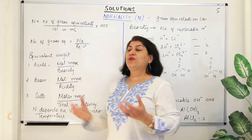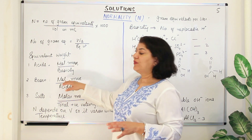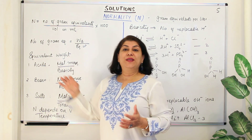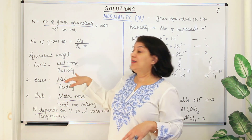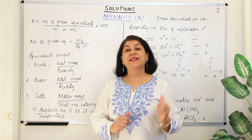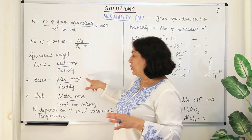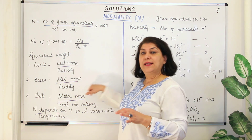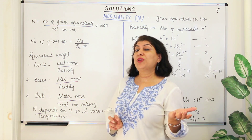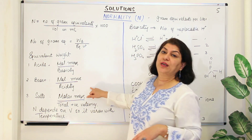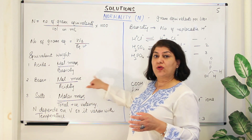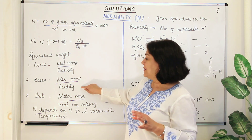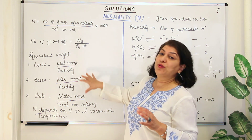For bases, the equivalent weight is the molecular mass divided by the acidity of the base. Acidity is the number of replaceable OH⁻ ions in the base. Sodium hydroxide has one OH⁻ ion, so it is divided by one. Calcium hydroxide has two replaceable OH⁻ ions, so you divide its mass by two. For salts, the denominator is the total positive charge on the cation — you write the molar mass of the salt divided by the positive valency of the cation.